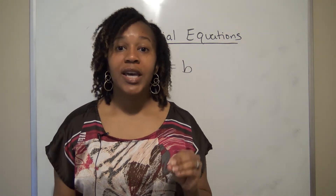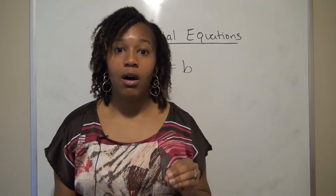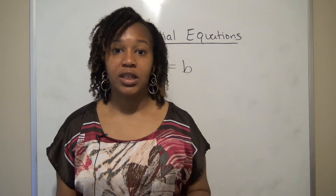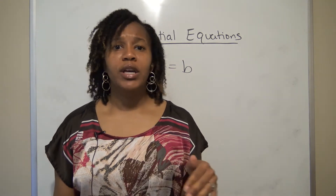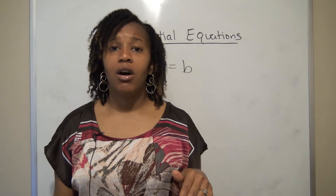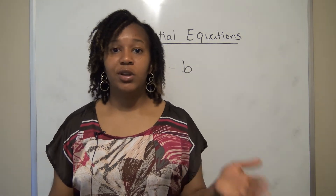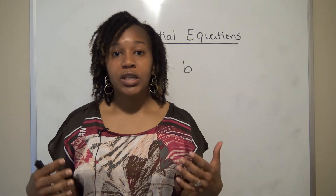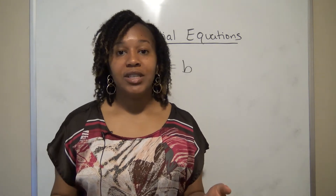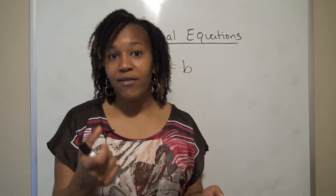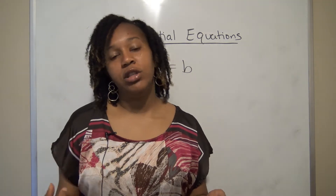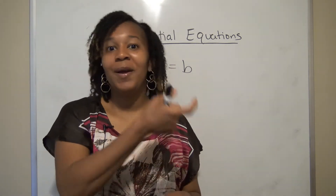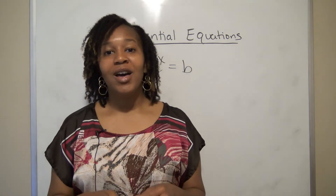So in this video I'm going to show you a second method for solving exponential equations, and this will involve taking the log of both sides. You could take the common log, the natural log, or the log with any base — whatever you do to one side you have to do to the other. Once you take the log of both sides, you can remove the variable from the exponent using the power property of logs.